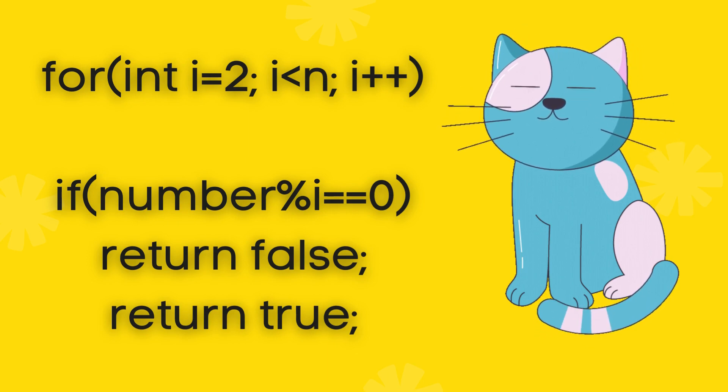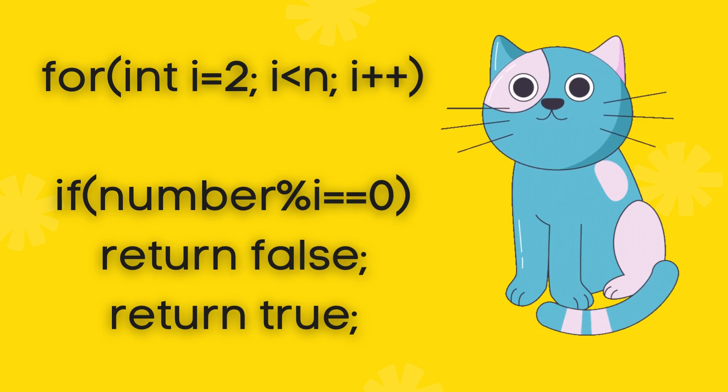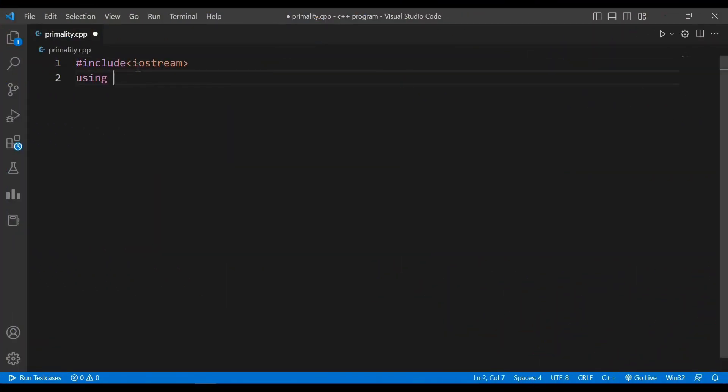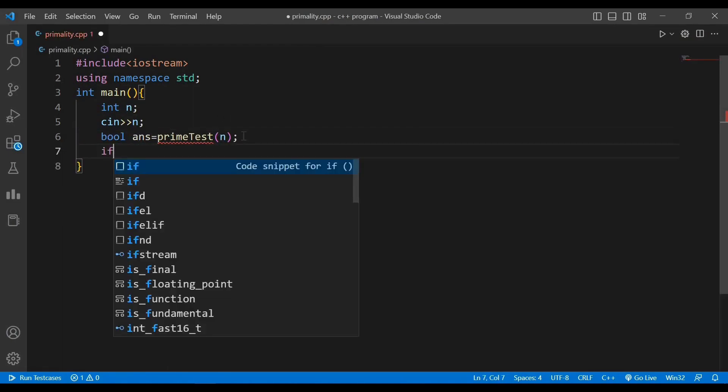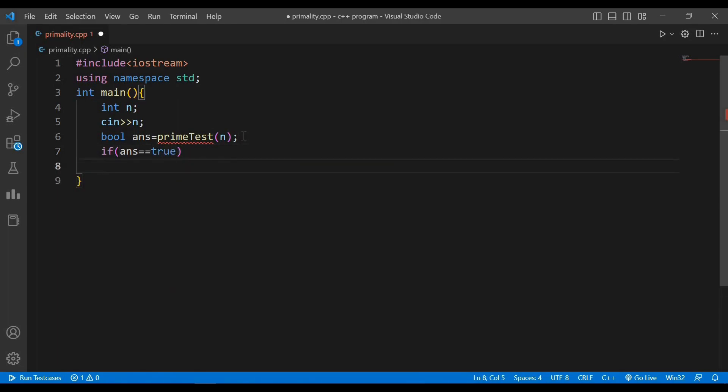Let's implement this into code. Declare the variable and now call the function. We want to create a boolean type of function, so let's store the variable and print a statement.